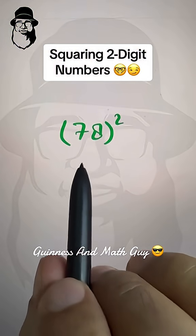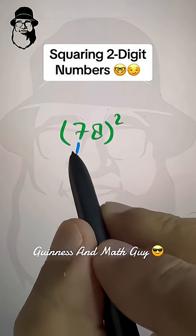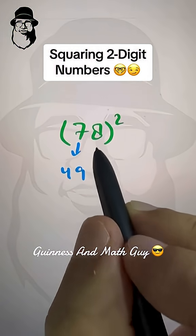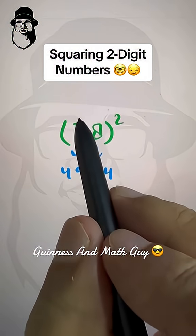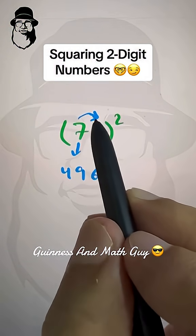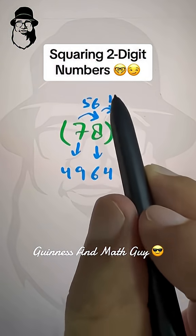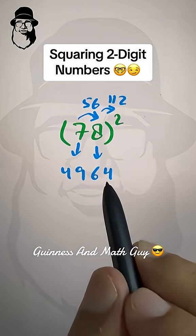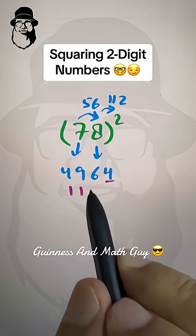Let's square this the same way. Square of 7 is 49, square of 8 is 64. Then we multiply: 7 times 8 is 56, times 2 is 112. We leave one place from the right and write our answer 112.